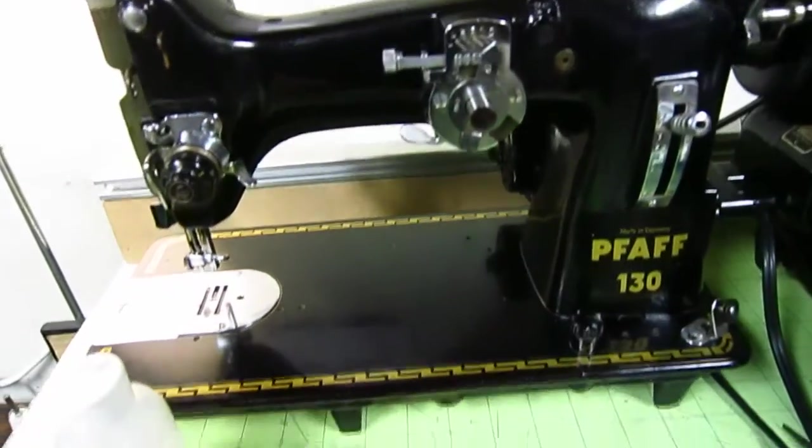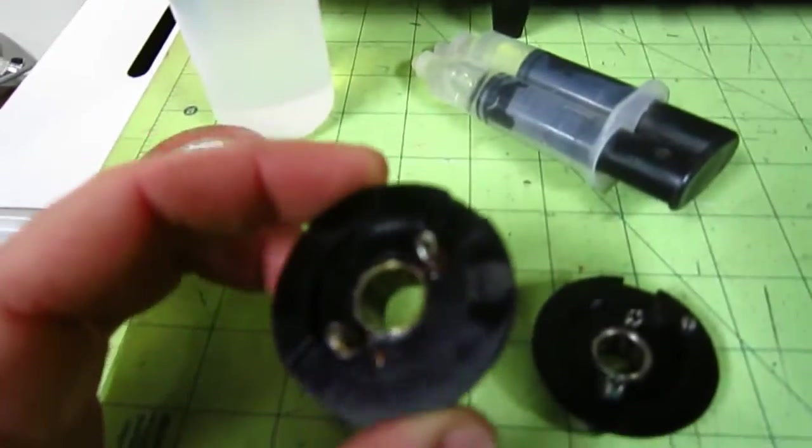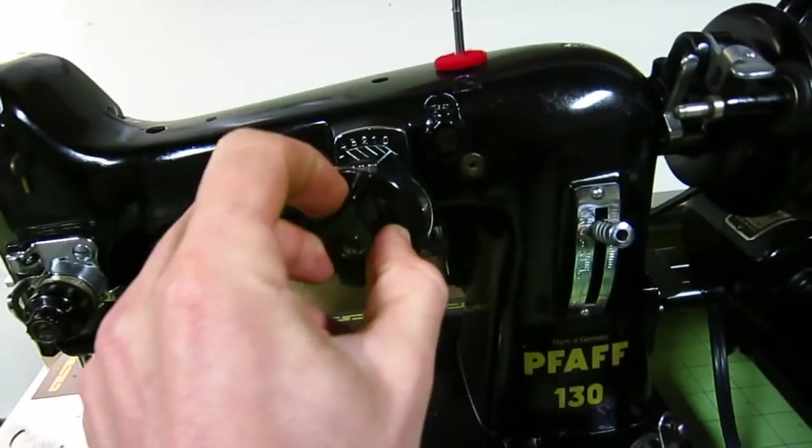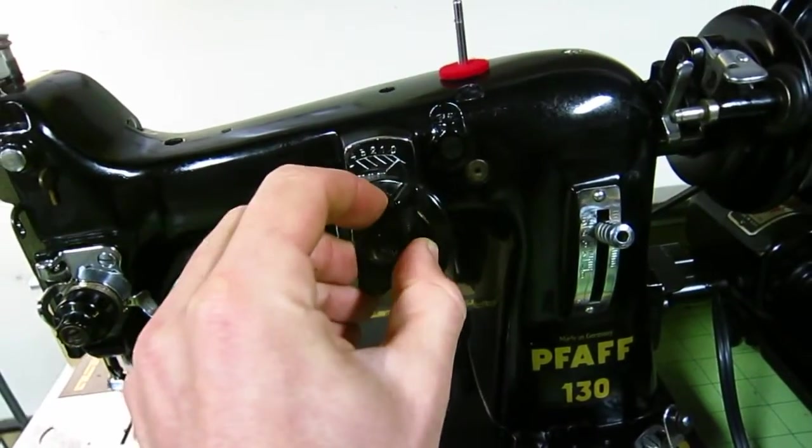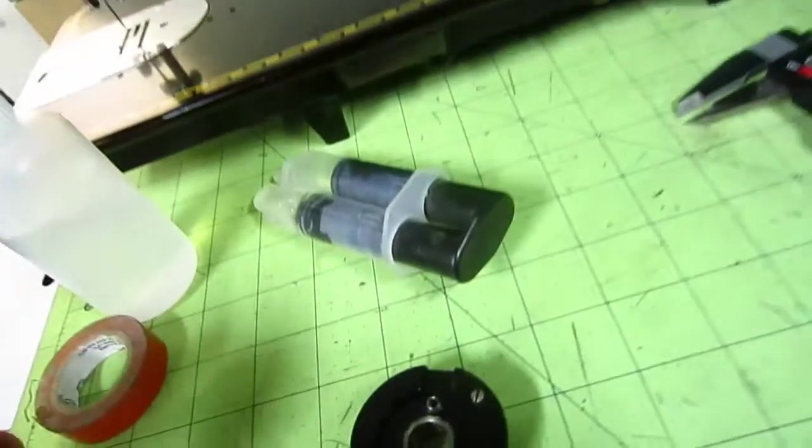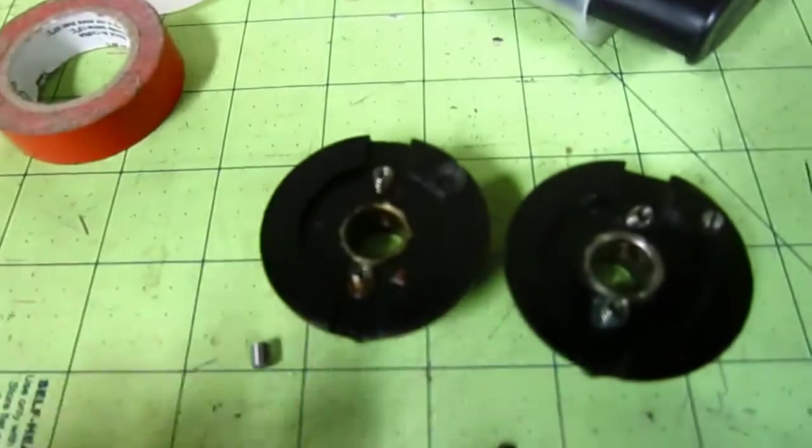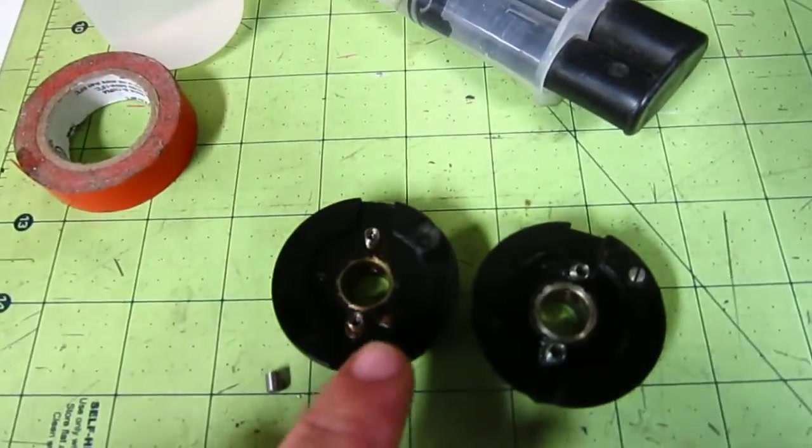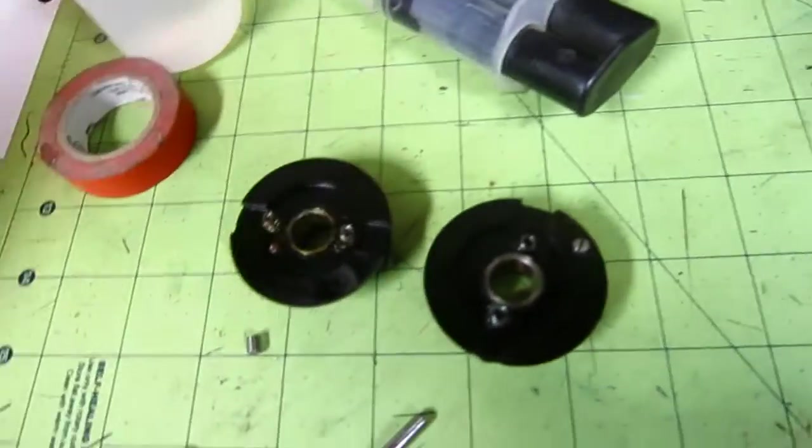The knob here that controls the zigzag and straight stitch width was broken. On the left you'll see this is the bad one, and you can see a hole here where there should be a stop screw.